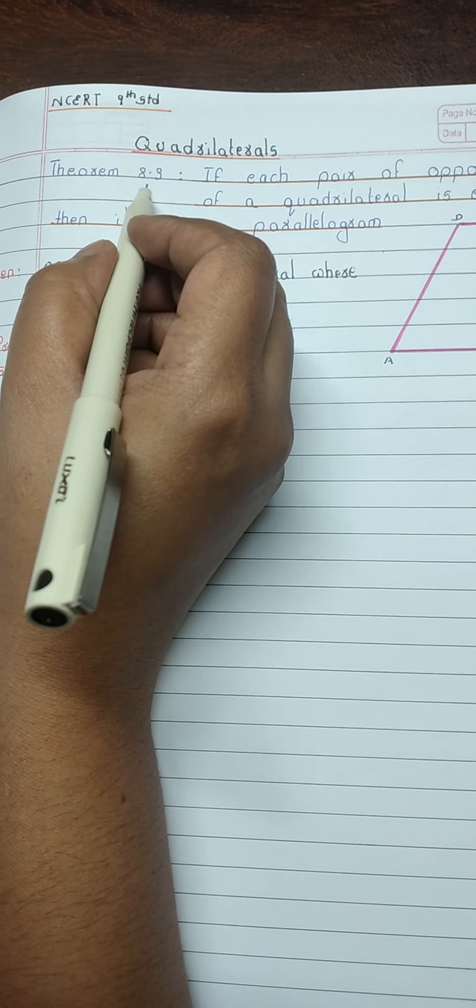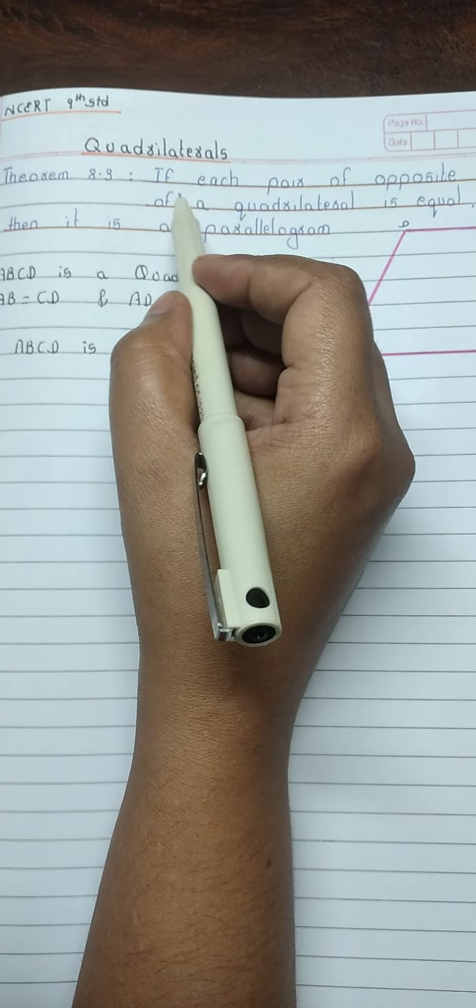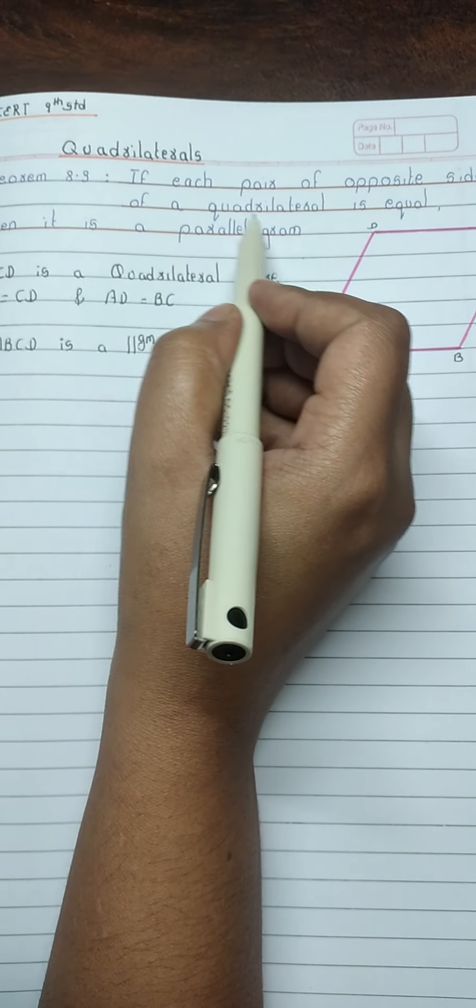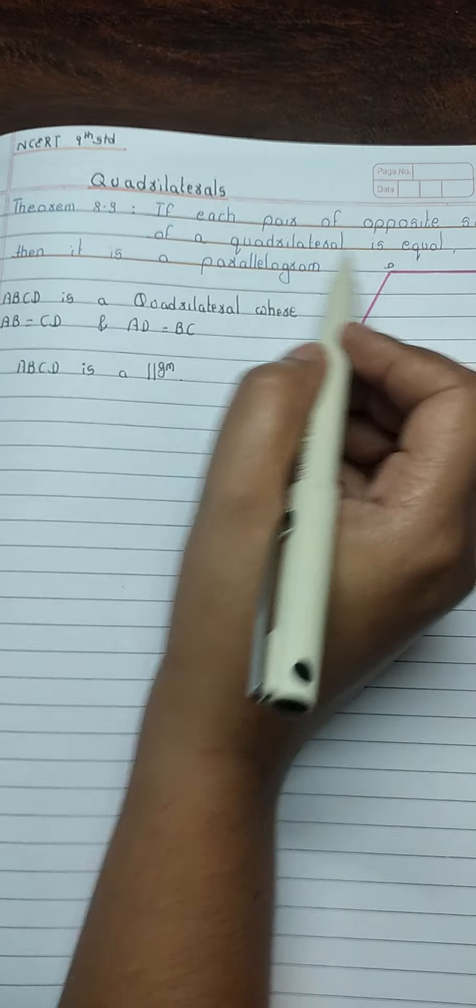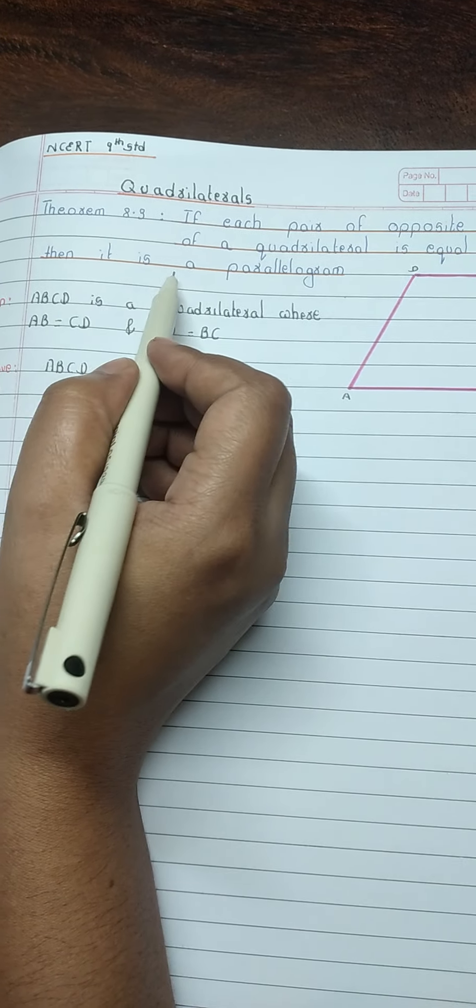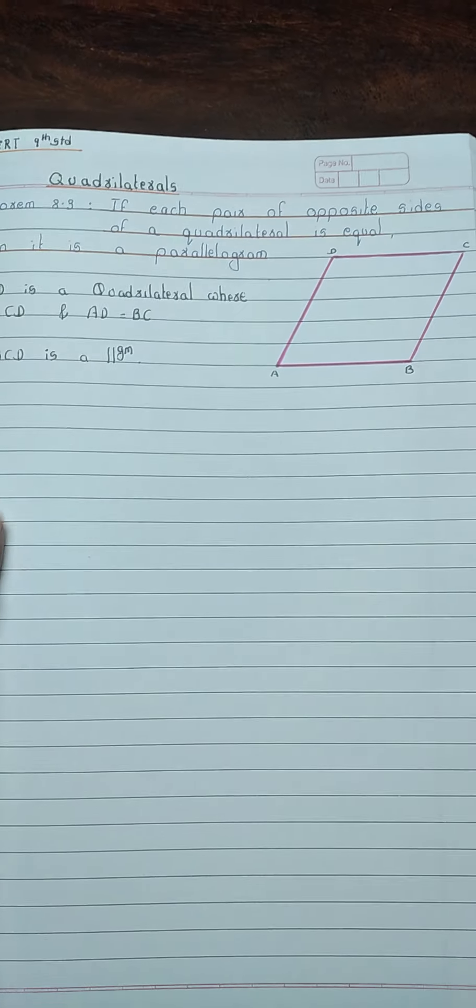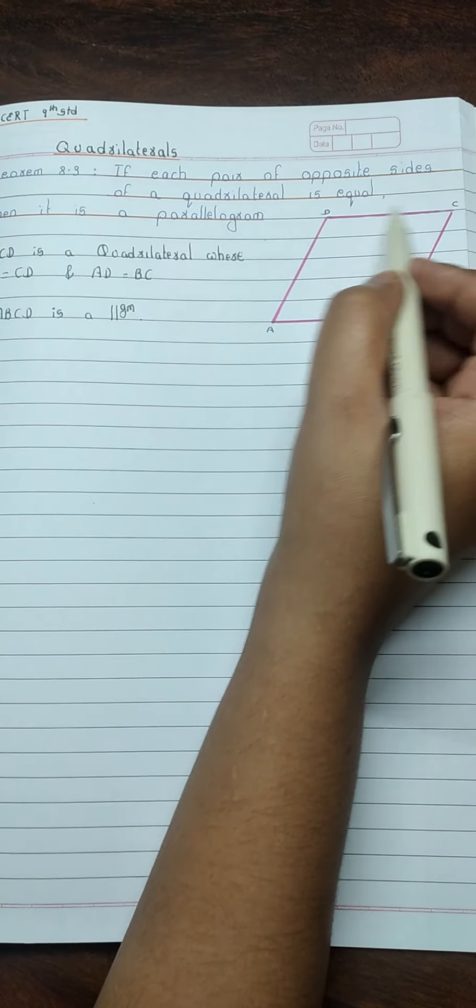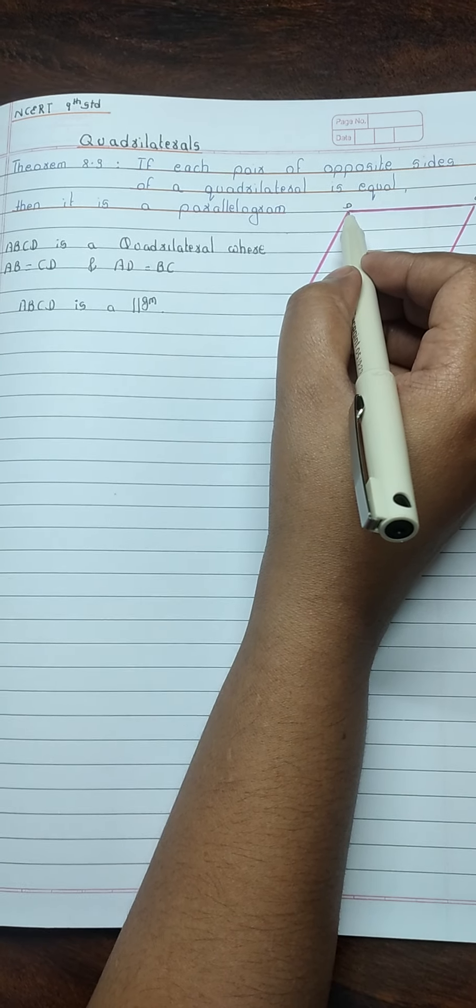Theorem 8.3: If each pair of opposite sides of a quadrilateral is equal, then it is a parallelogram. Now, ABCD is a quadrilateral.